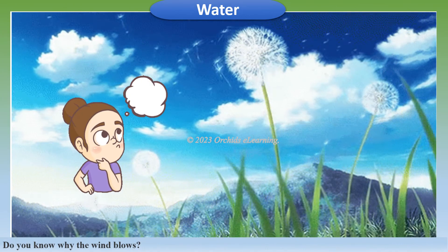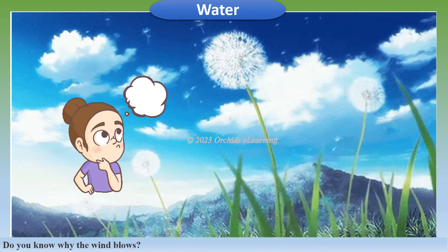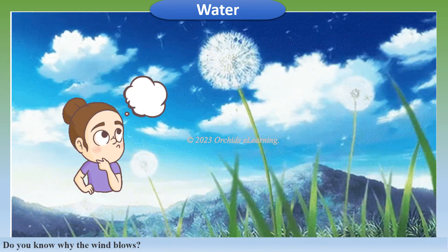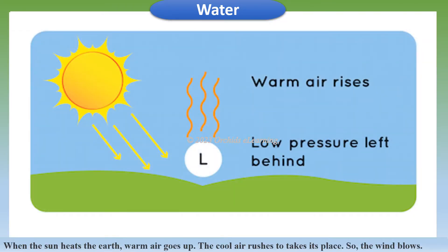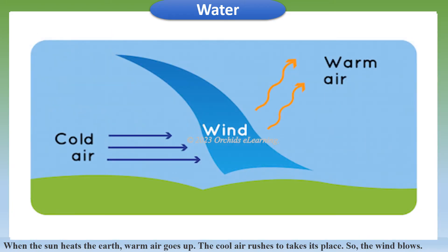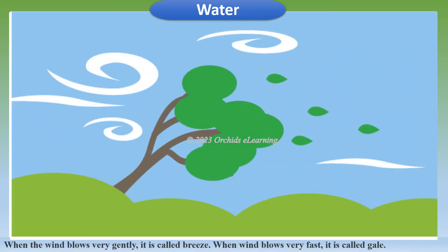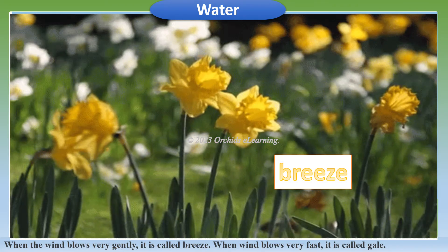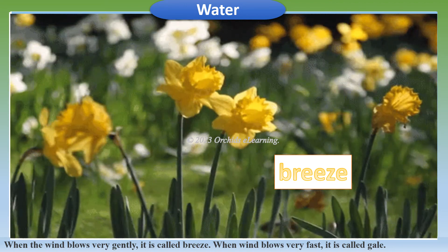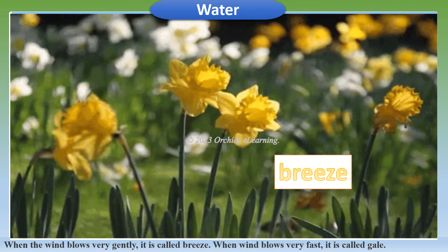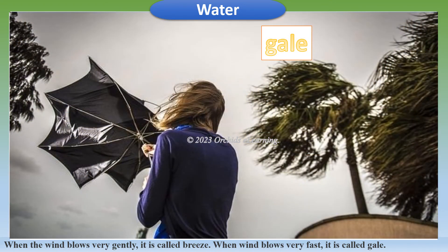When the sun heats the earth, warm air goes up and cool air rushes in to take its place — that is why the wind blows. When the wind blows very gently it is called a breeze. When wind blows very fast it is called a gale.